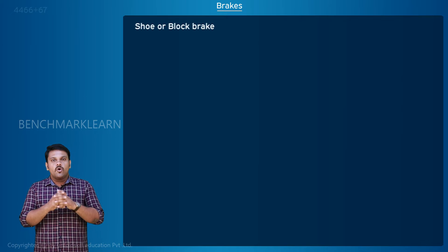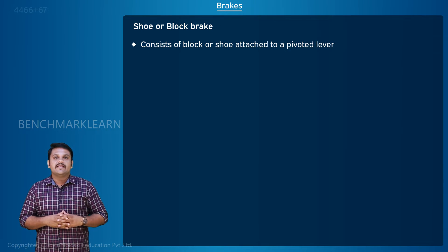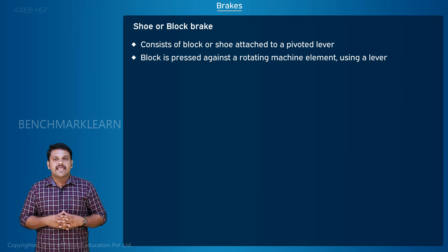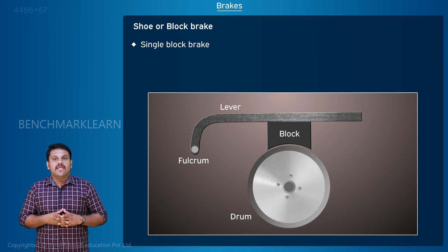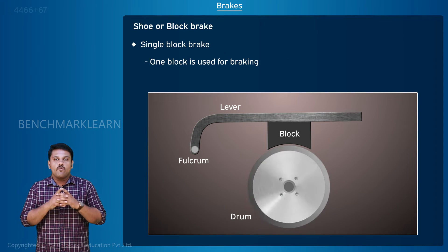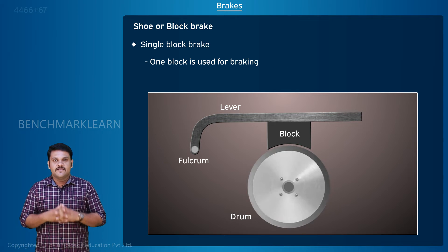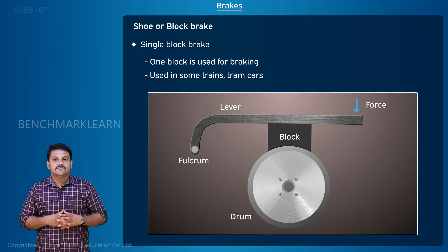Shoe or block brake: it consists of a block or shoe attached to a pivoted lever. The block is pressed against a rotating machine element such as a drum by the action of the lever. In a single block brake, only one block is used for braking. These types of brakes are used in some trains and tram cars.